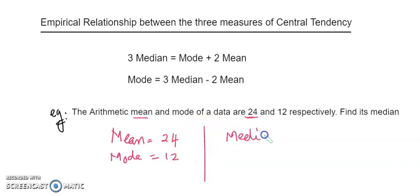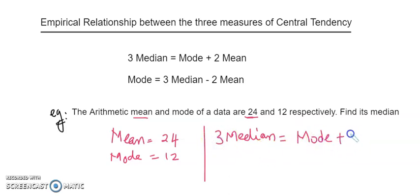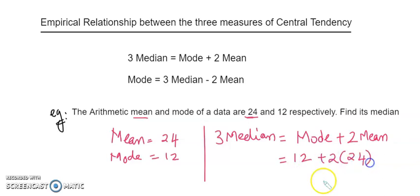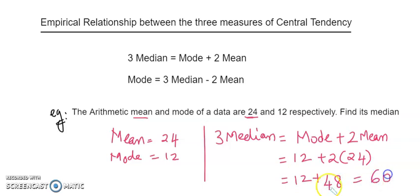We need to find the median. The formula says three times median equals mode plus two mean. That is equals to 12 plus two multiplied by 24, which is 12 plus 48, equals 60.